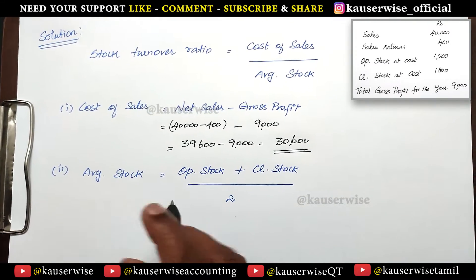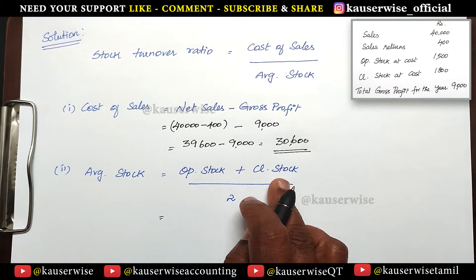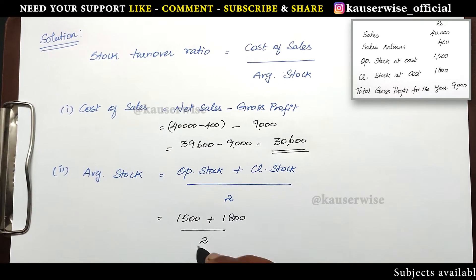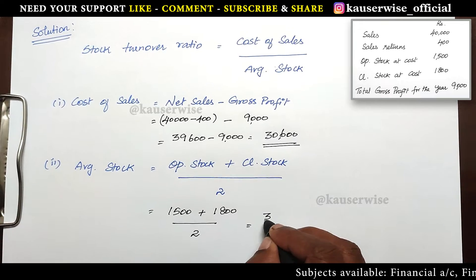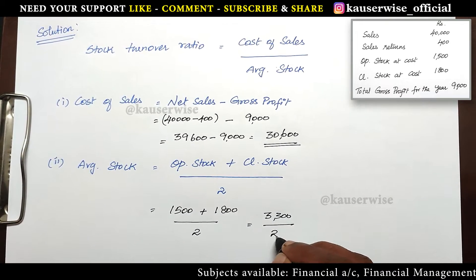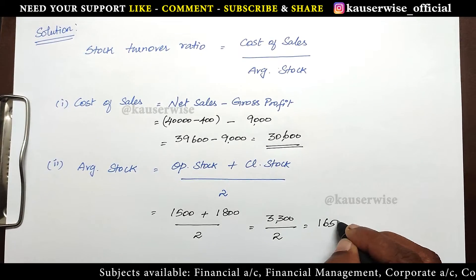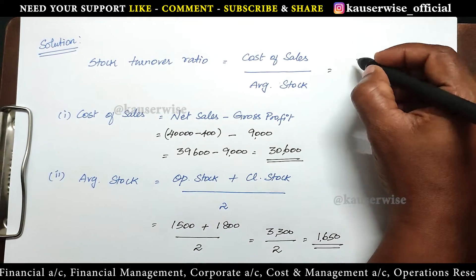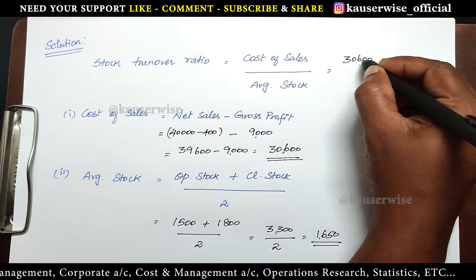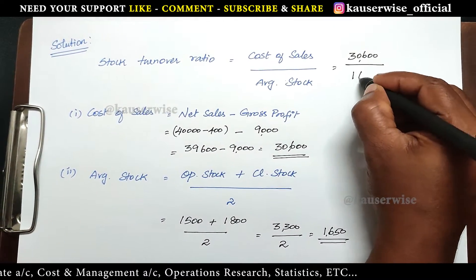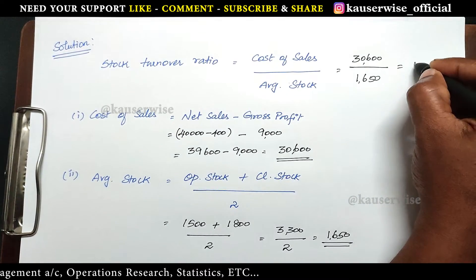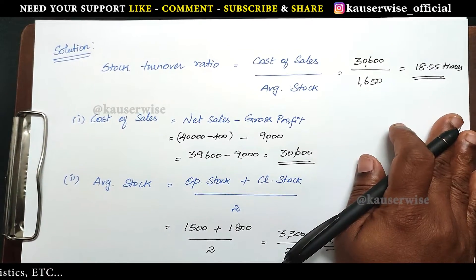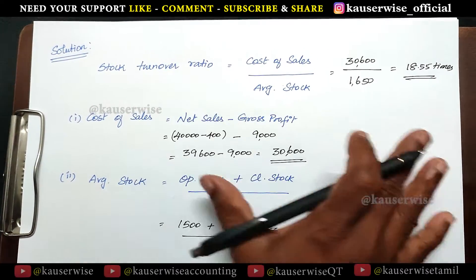The next one is average stock. The formula is opening stock plus closing stock divided by 2. So opening stock 1,500 plus closing stock 1,800 divided by 2. 3,300 divided by 2, you will be getting 1,650. This is average stock. Just substitute these two values in the formula. Cost of sales 30,600 divided by average stock 1,650. The answer is 18.55 times. This is the way to calculate stock turnover ratio.